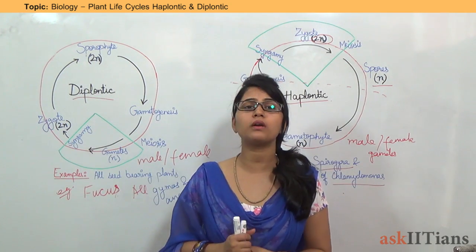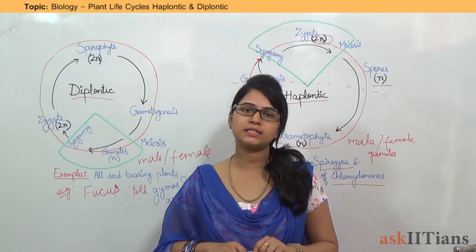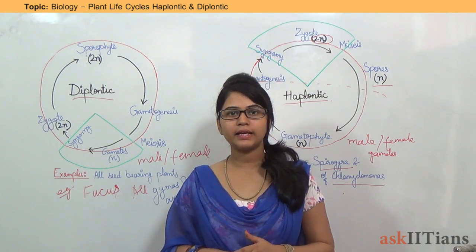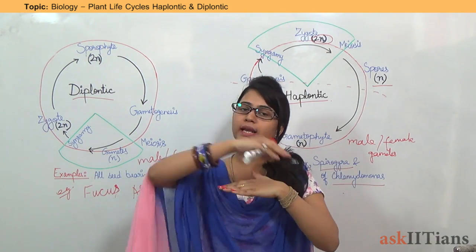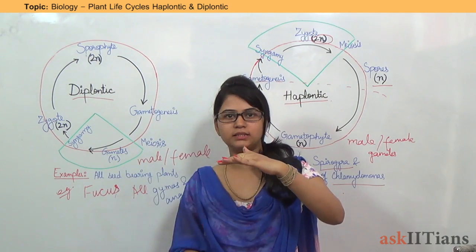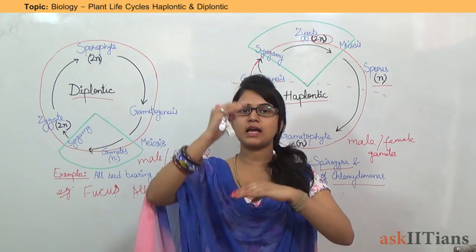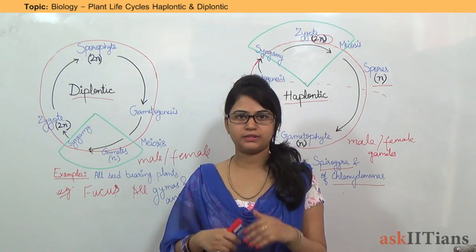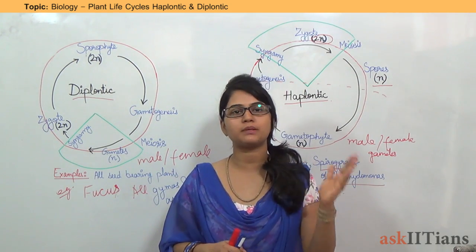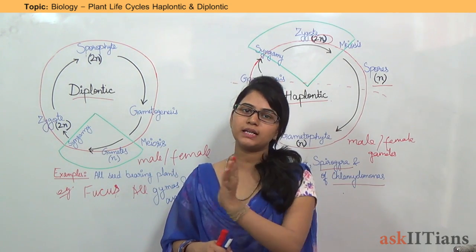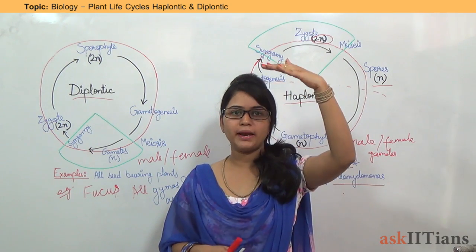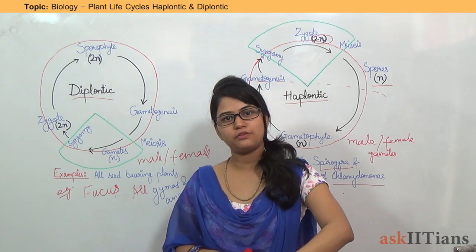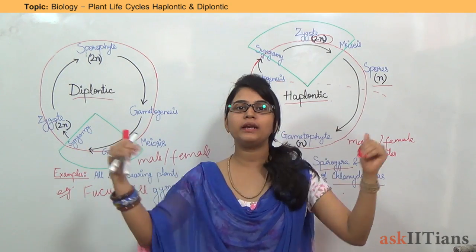There is one more life cycle known as the diplo-haplontic life cycle. In that life cycle, both the phases — one haploid phase and one diploid phase — are equal in volume. That is why it is known as the diplo-haplontic life cycle. The diploid sporophyte phase and the haploid gametophyte phase are both equal in dominance.